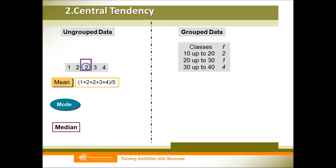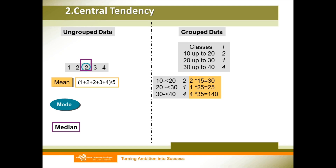For grouped data, when we want to calculate the mean, we first need to find the midpoint of each class. For the first class, 10 up to 20, the midpoint is 15. Then we multiply the frequency of each class by its midpoint. In the first class the frequency is 2, so 2 multiplied by 15 gives 30. We do this for each class and add all the results up: 30 plus 25 plus 140 equals 195. Then divide by seven — the total number of data points. Note: many students divide by three (the number of classes), but that is incorrect. You divide by seven. So 27.86 is the mean for this grouped data.